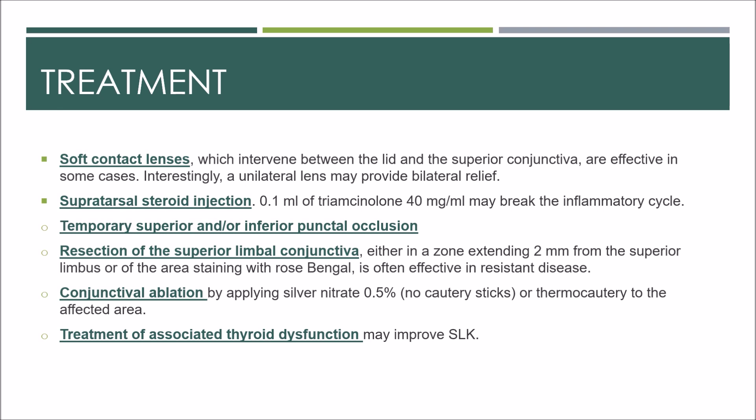Temporary superior and/or inferior punctal occlusion may also be considered. Resection of the superior limbal conjunctiva, either in a zone extending 2 mm from the superior limbus or of the area staining with rose bengal, is often effective in resistant disease. Lax conjunctiva is removed with regrowth tending to be firmly anchored, and there is no consensus as to whether the underlying Tenon's capsule should be excised. Conjunctival ablation by applying silver nitrate 1.5% or thermocautery to the affected area is another option. Treatment of associated thyroid dysfunction may also improve SLK.